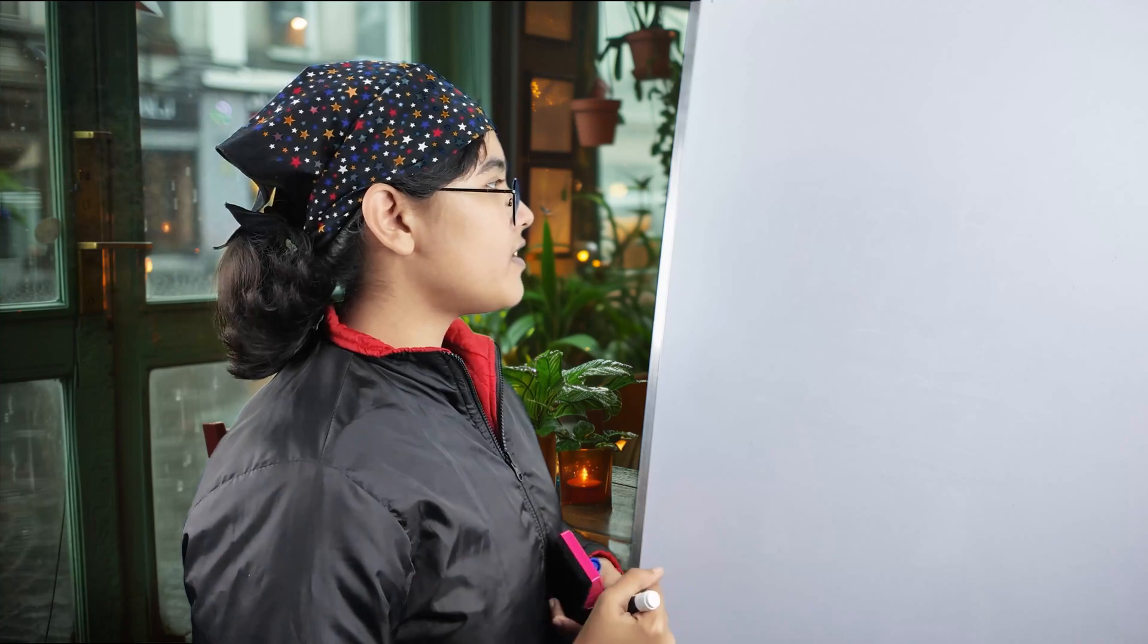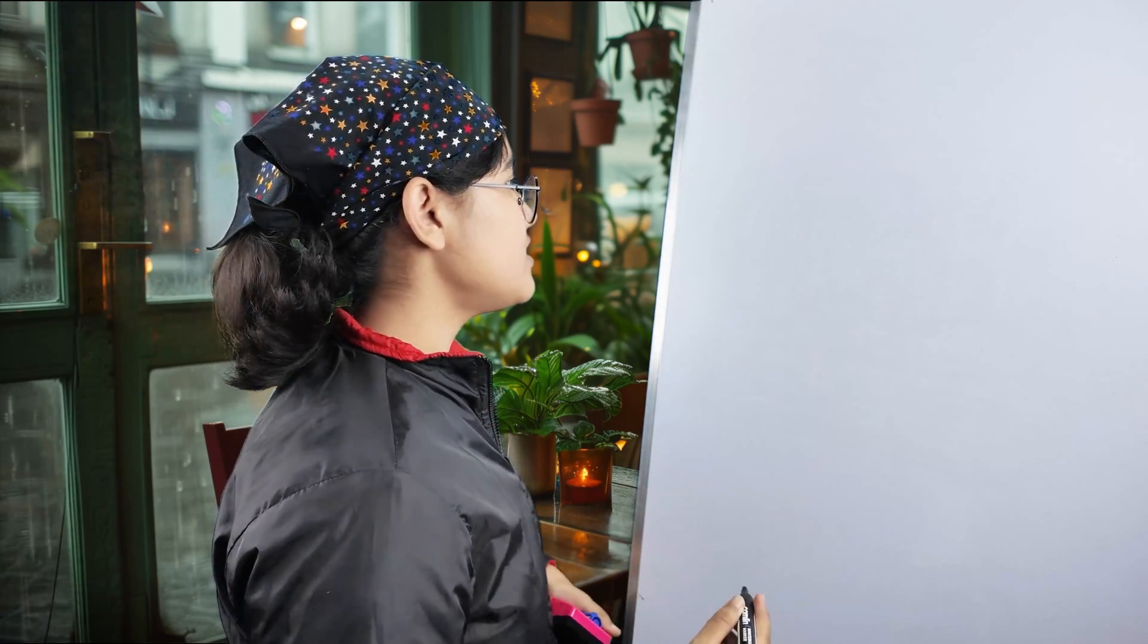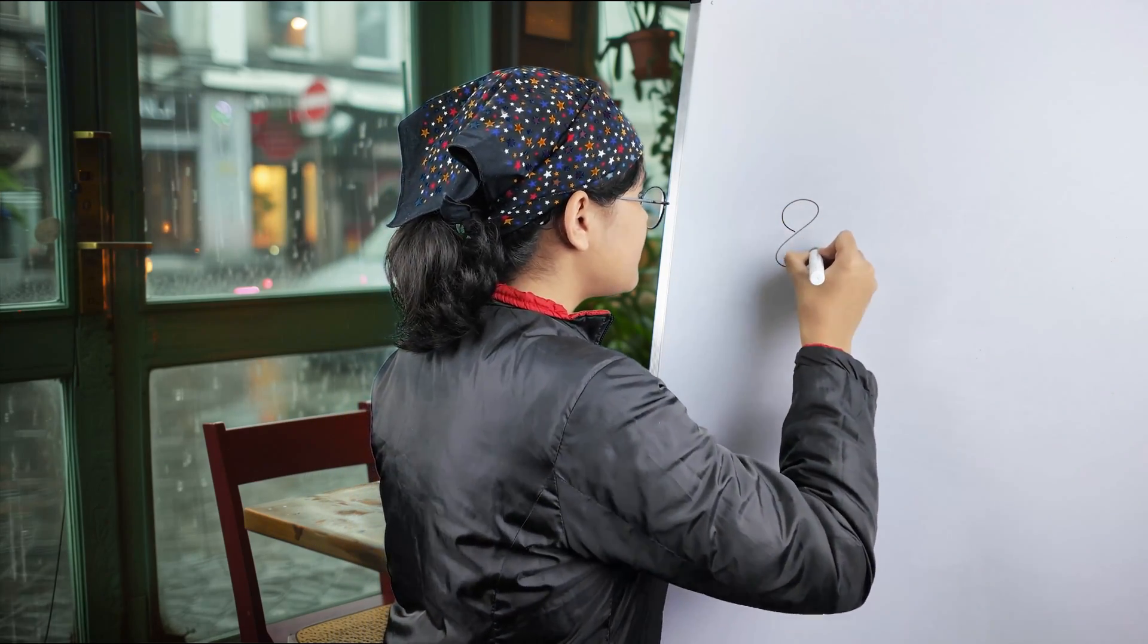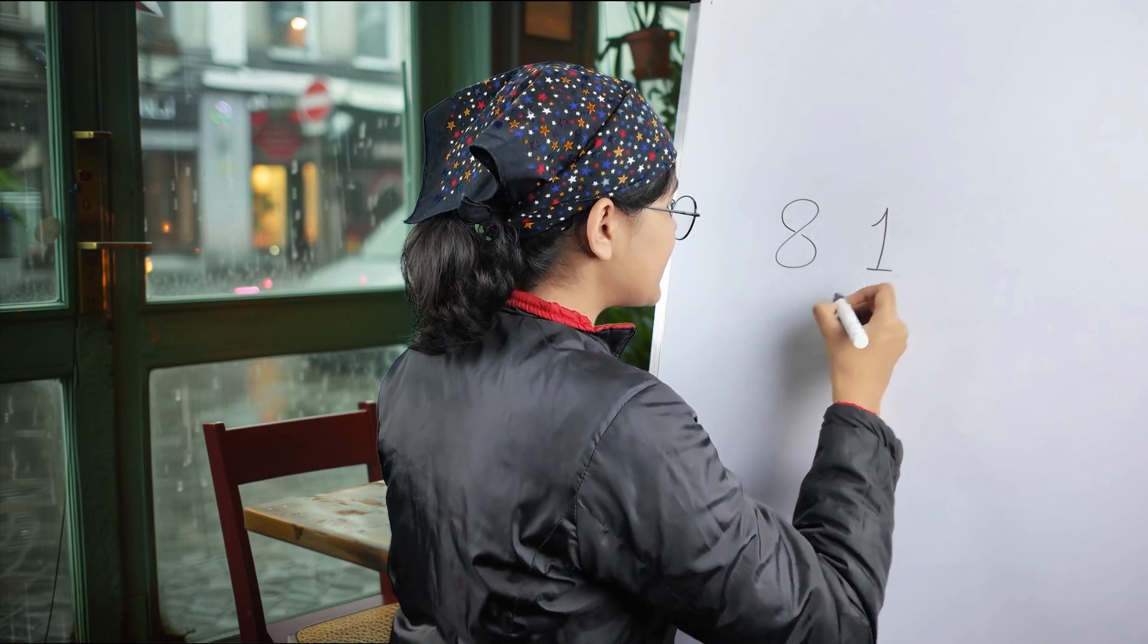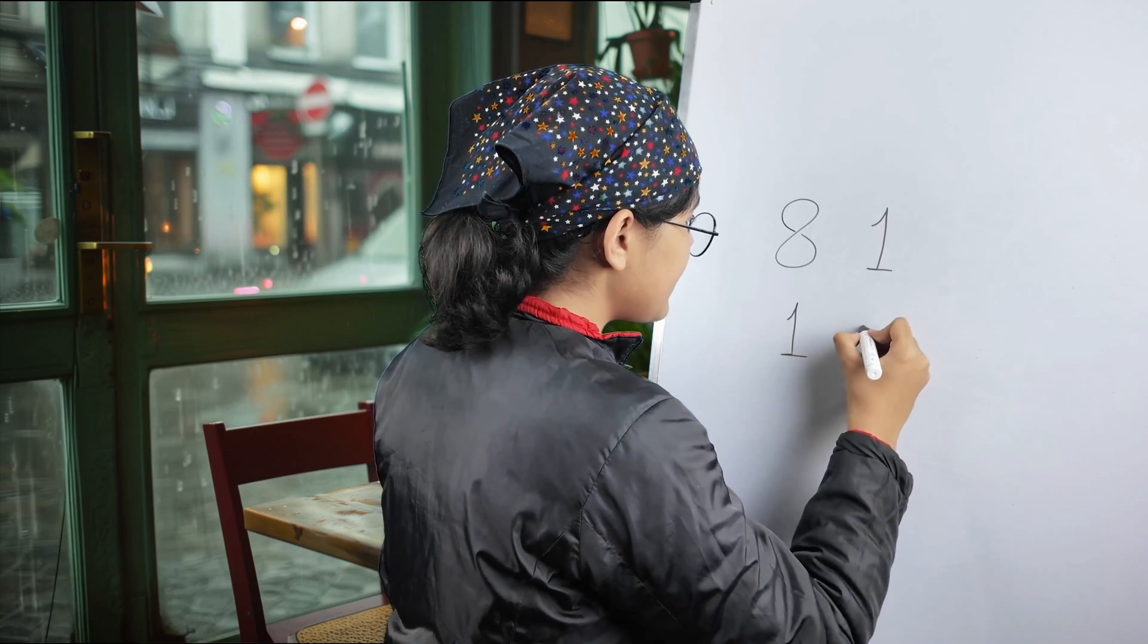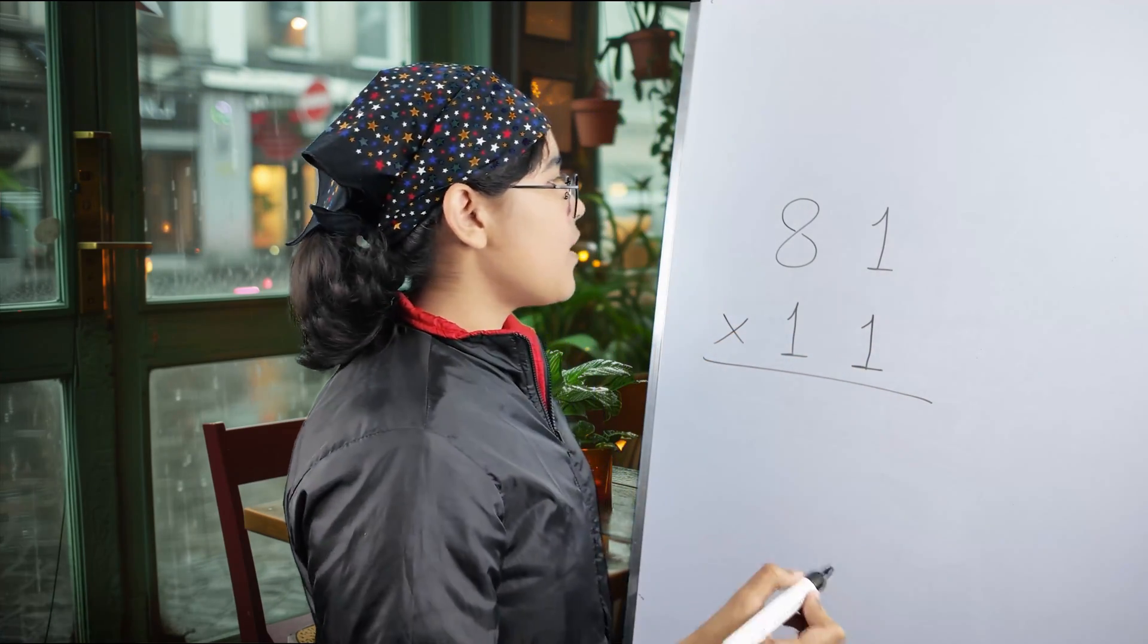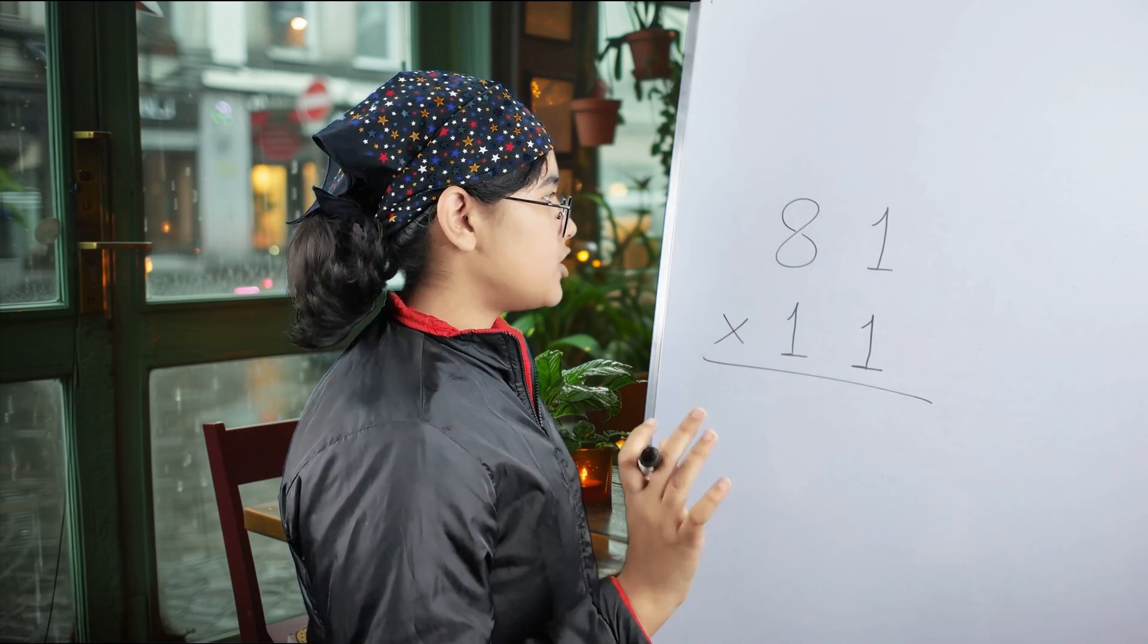The first sum we will take, first multiplication, that is a kind of revision one. If you have seen the other video, then you can do it on your own. Otherwise, you can just follow us. The first number: 81 multiplied by 11. Short and easy one! I'll just show you how to do it.